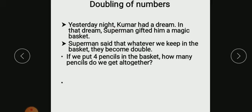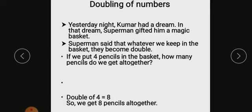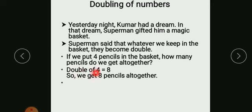If we put 4 pencils in the basket, how many pencils do we get altogether? In our magic basket, you put 4 pencils. That means it becomes double. So how much does it become? Double of 4 is 8. So we get 8 pencils altogether.